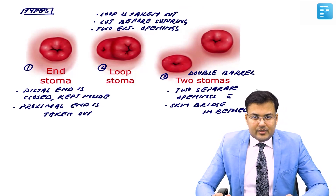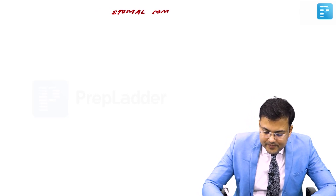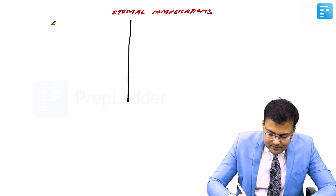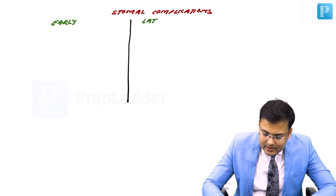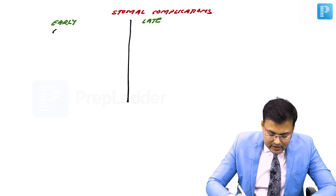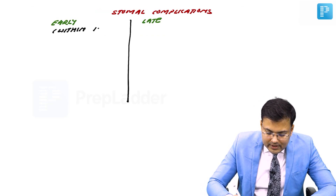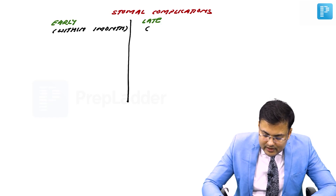In NEET and AIIMS, the most commonly asked questions relate to stoma complications. Stoma complications are of two types: early complications, seen within one month of creating the stoma, and late complications, seen after one month of creation. You have to remember the time period.